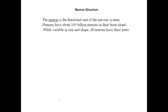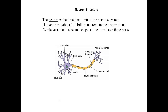There are 100 billion neurons in the human brain alone. They are variable in size and shape, but they do have three main parts. Here's a picture of a motor neuron showing those three main parts.